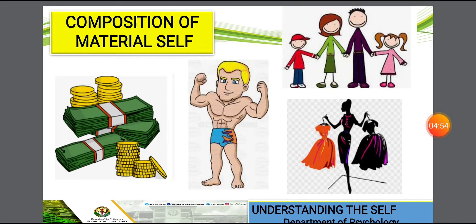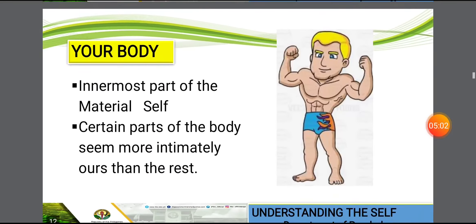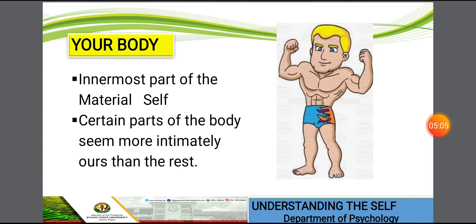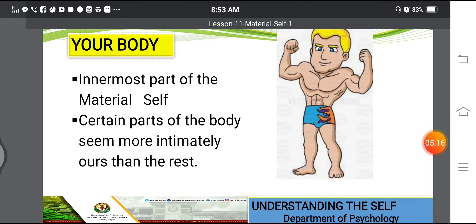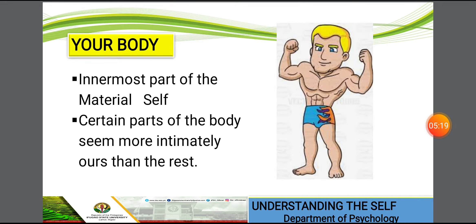Let's look at the composition of material self. First is your body — the innermost part of the material self. Certain parts of the body seem more intimately ours than the rest. If you resemble your mother or father, that's the influence of heritage through genes. Your body is yours even if you have a husband or wife — it is not theirs. So control it and take good care of it.